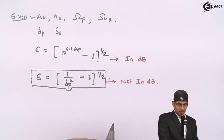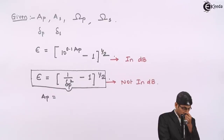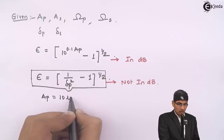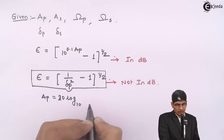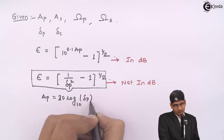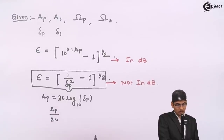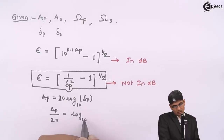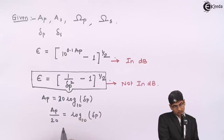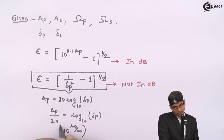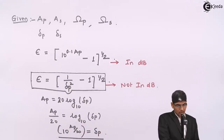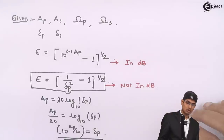I would recommend always using the non-dB formula to avoid confusion. Even if values are given in dB, convert them first: ap = 20·log10(δp), so δp = 10^(ap/20). Then use only one formula consistently. Once we have epsilon, the next step is to find the order of the filter.